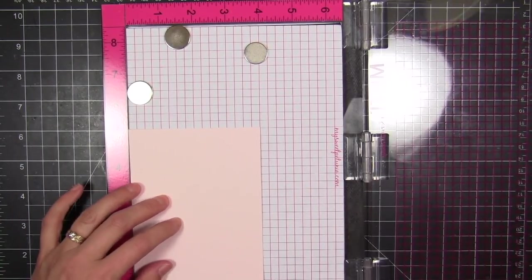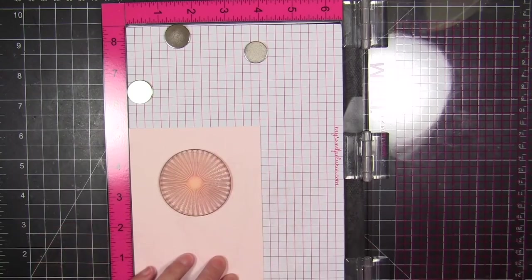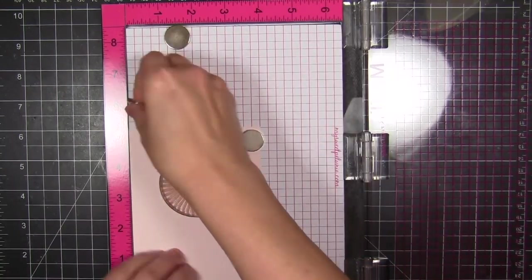You can just take your panel, place your stamp where you want it, and when you close the lid, it will mount the stamp to the lid. So now I can go ahead and ink up.